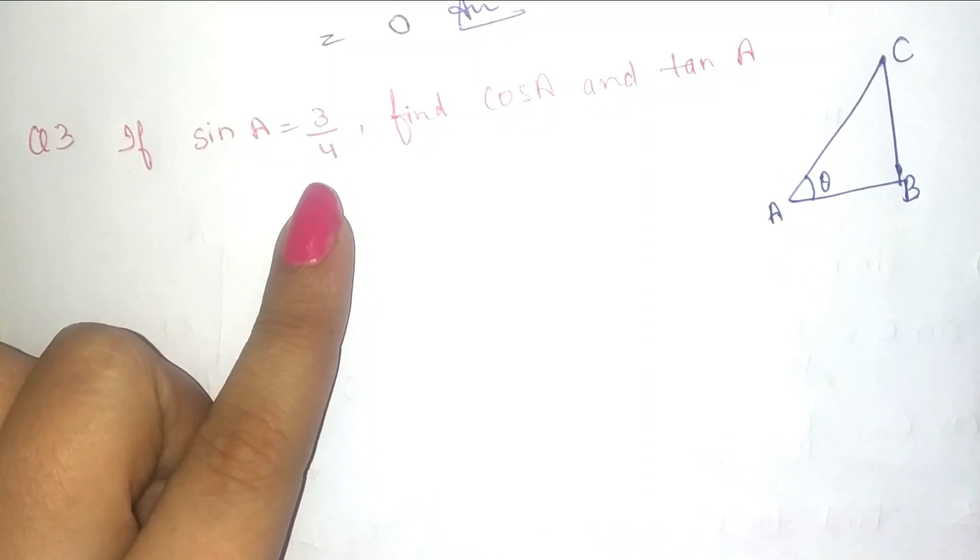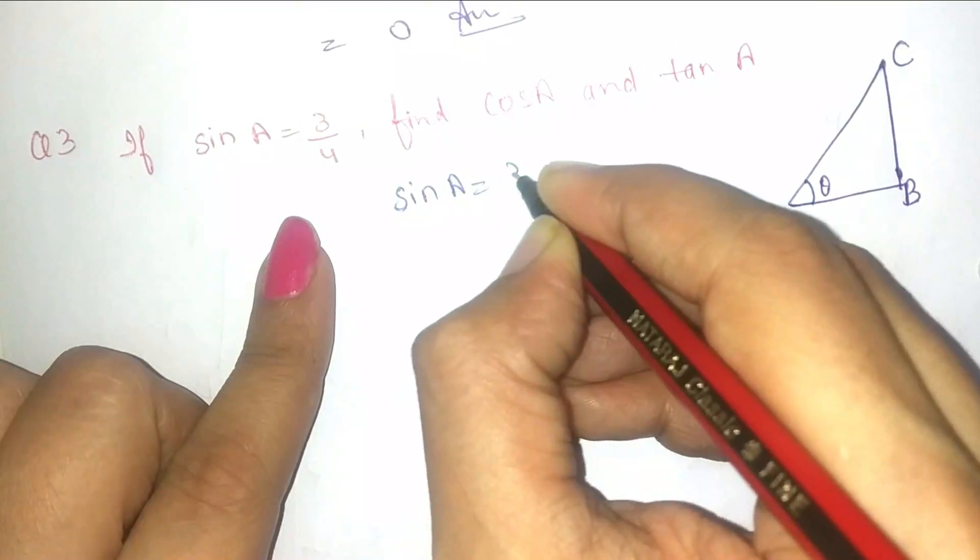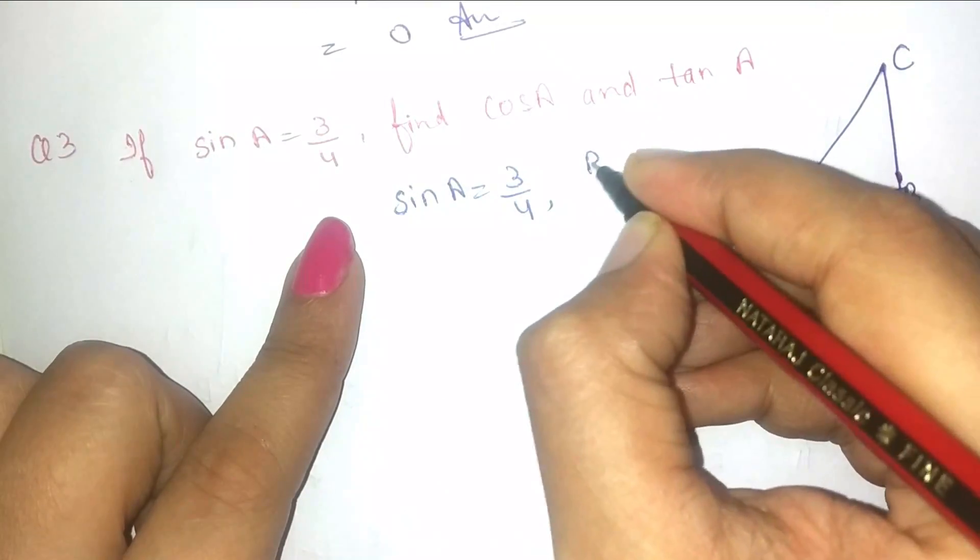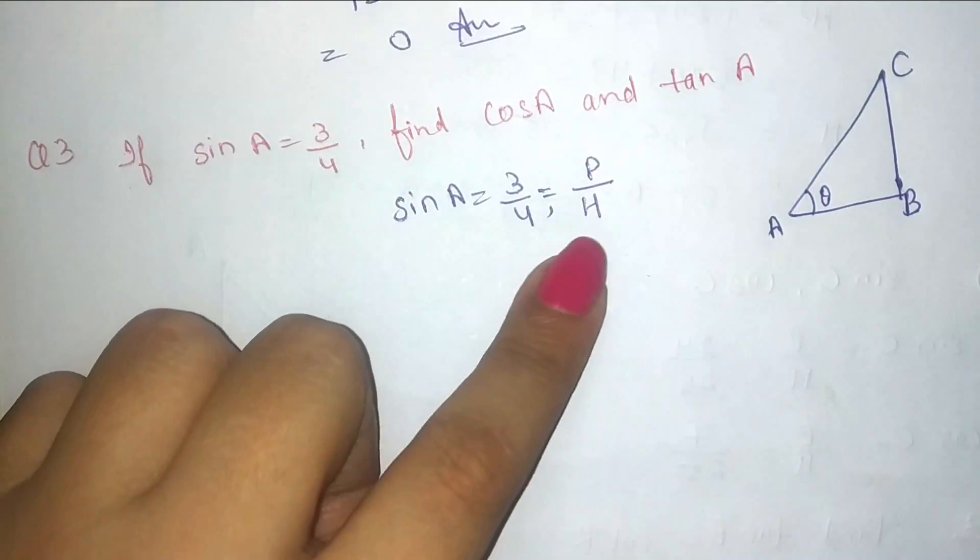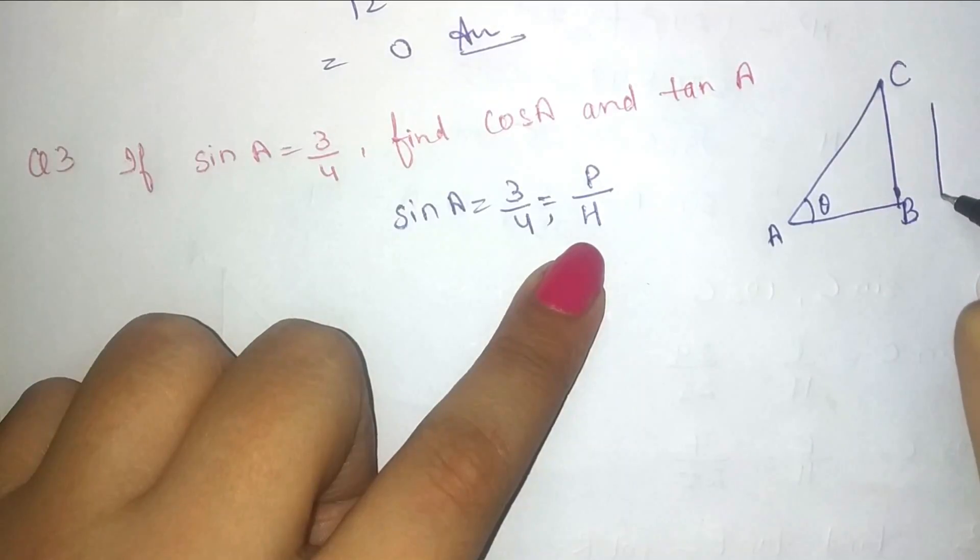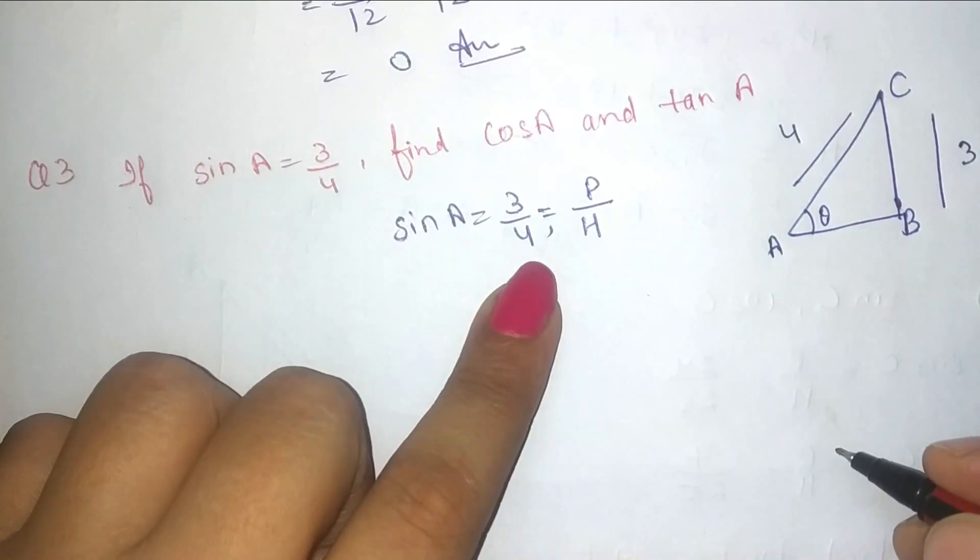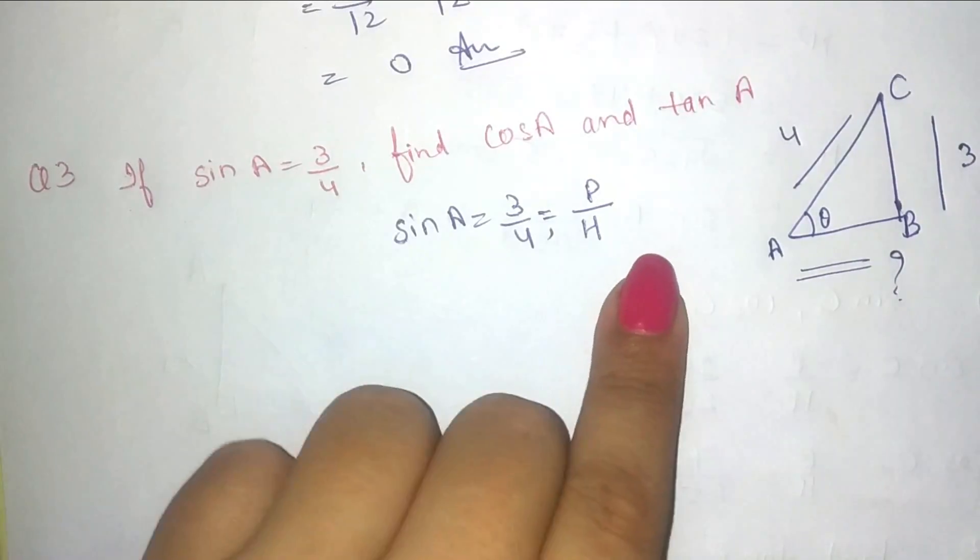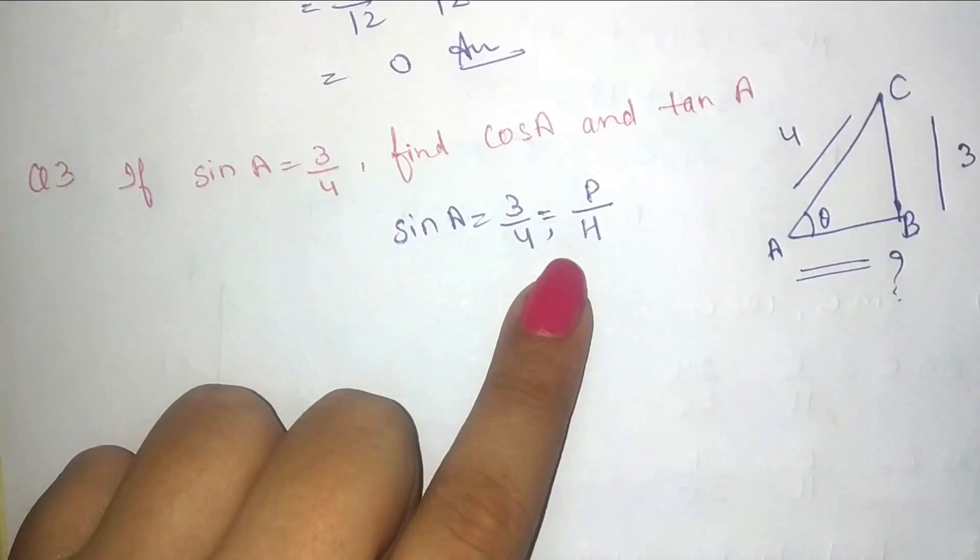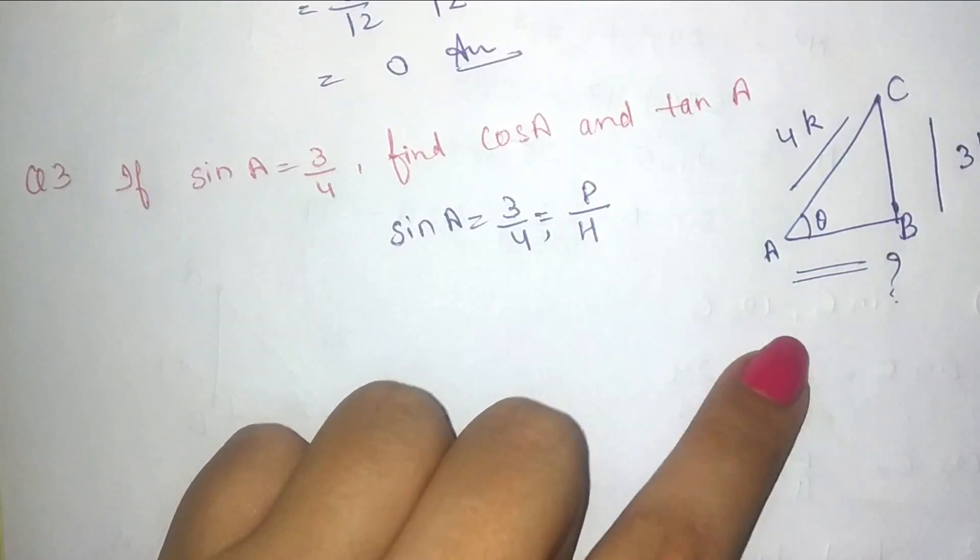So sin A ki value is given 3 upon 4. Sine A is equal to 3 by 4, this is equal to P upon H. So here it means the value of P is given, that is 3, value of H is given, that is 4, this value we have to find out. If it's given in ratio form, we will suppose let this is equal to 3k and this is equal to 4k. By Pythagoras theorem we will find out first of all base.